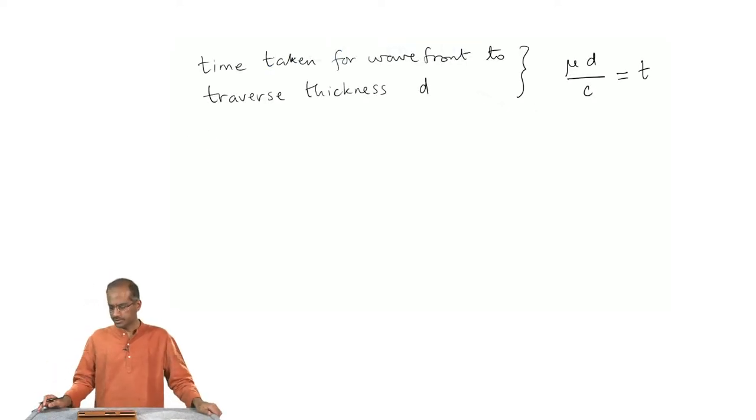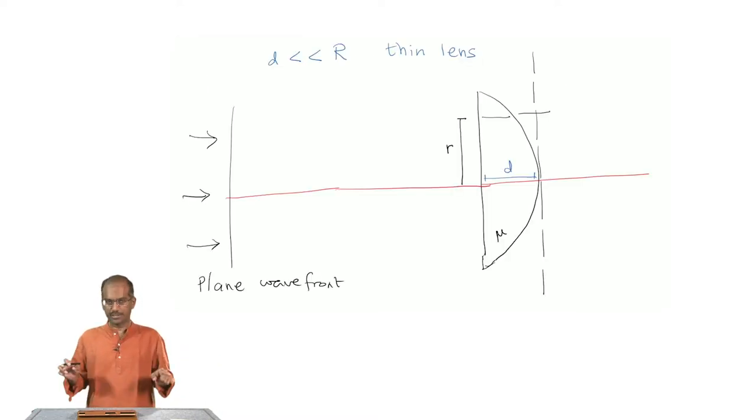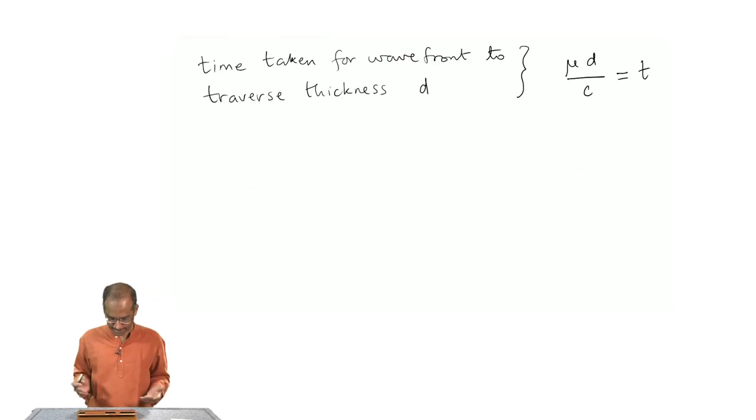Let us call this time d, the time taken for the wave front to travel this distance d inside the lens along the optic axis or the central axis. And that time would be given by mu times d divided by c. c is the velocity of light, d is the thickness of lens, and mu is the refractive index of the medium of lens.